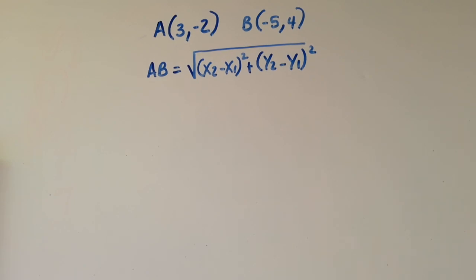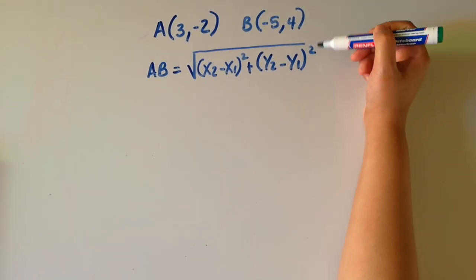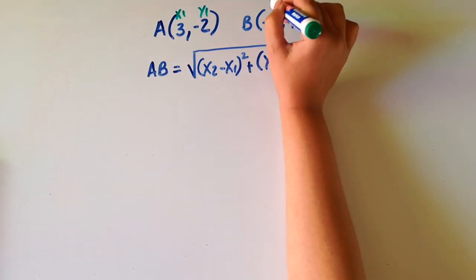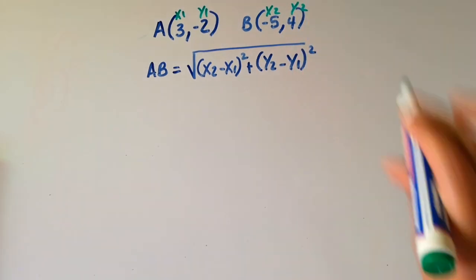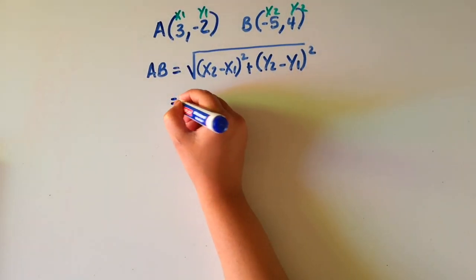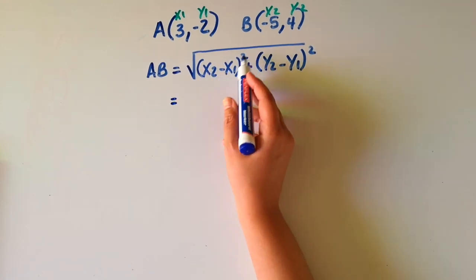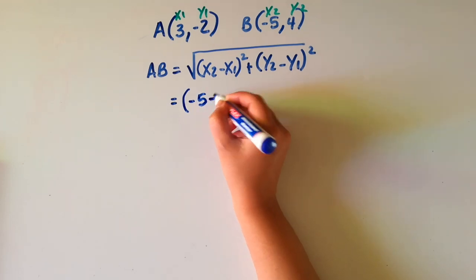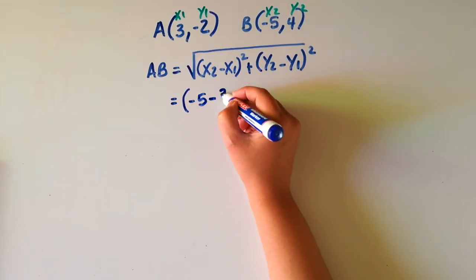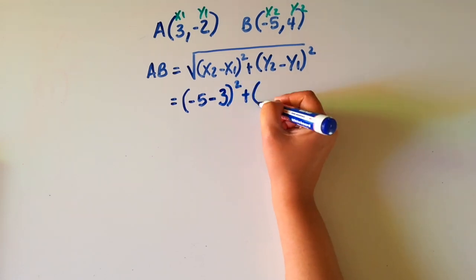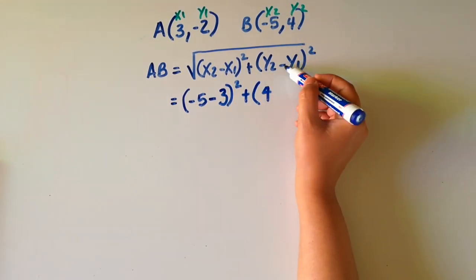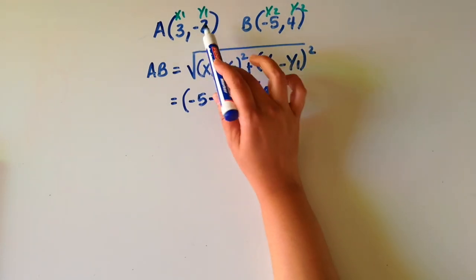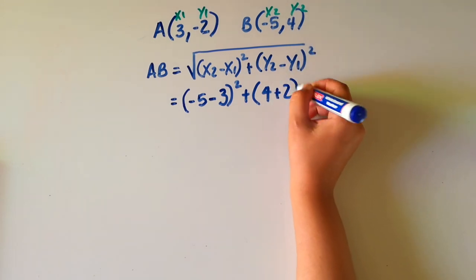Before I can put any of these points into this formula, I find it helps me to label this one x1, y1, and this is x2 and y2. So let's see now. x2 minus x1 squared: x2 is equal to minus 5 and x1 is equal to 3, squared, plus y2 is equal to 4 minus y1 is equal to minus 2. So if I have to write minus minus 2, it will become plus 2 squared.